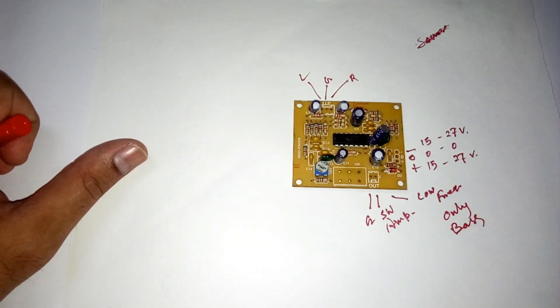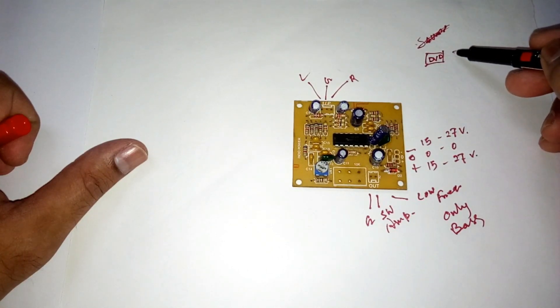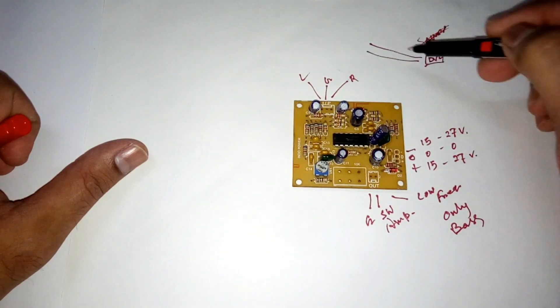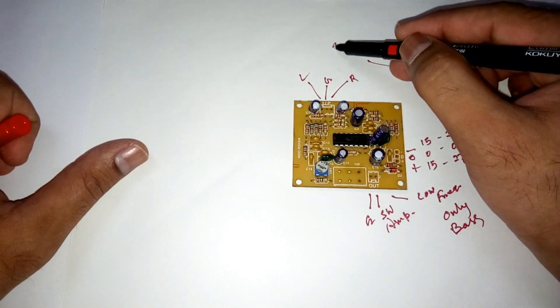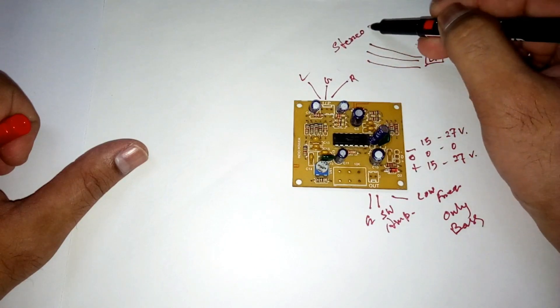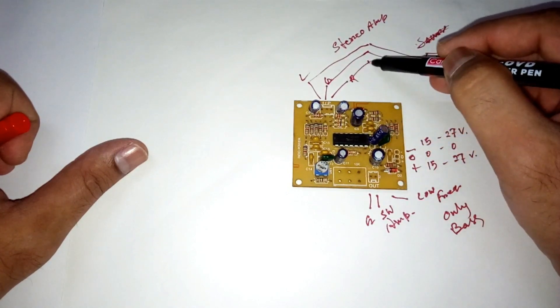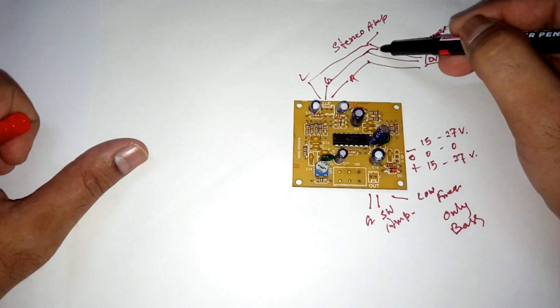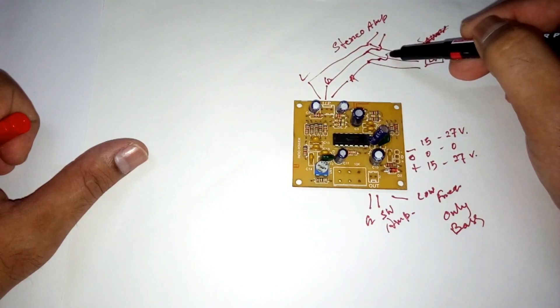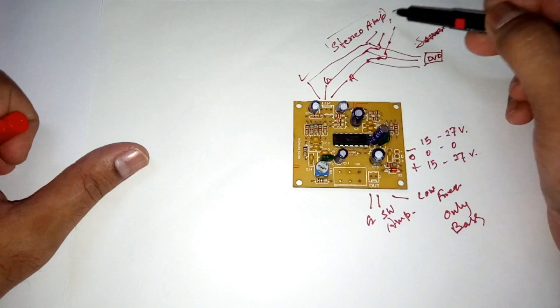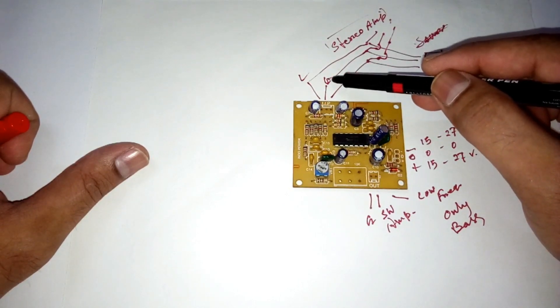So you can connect it with any of your existing stereo amplifier. So suppose this is the source which is DVD or CD or whatever, and from here the stereo connection, three are going to your stereo amp. And from there you just use a parallel connection like this.